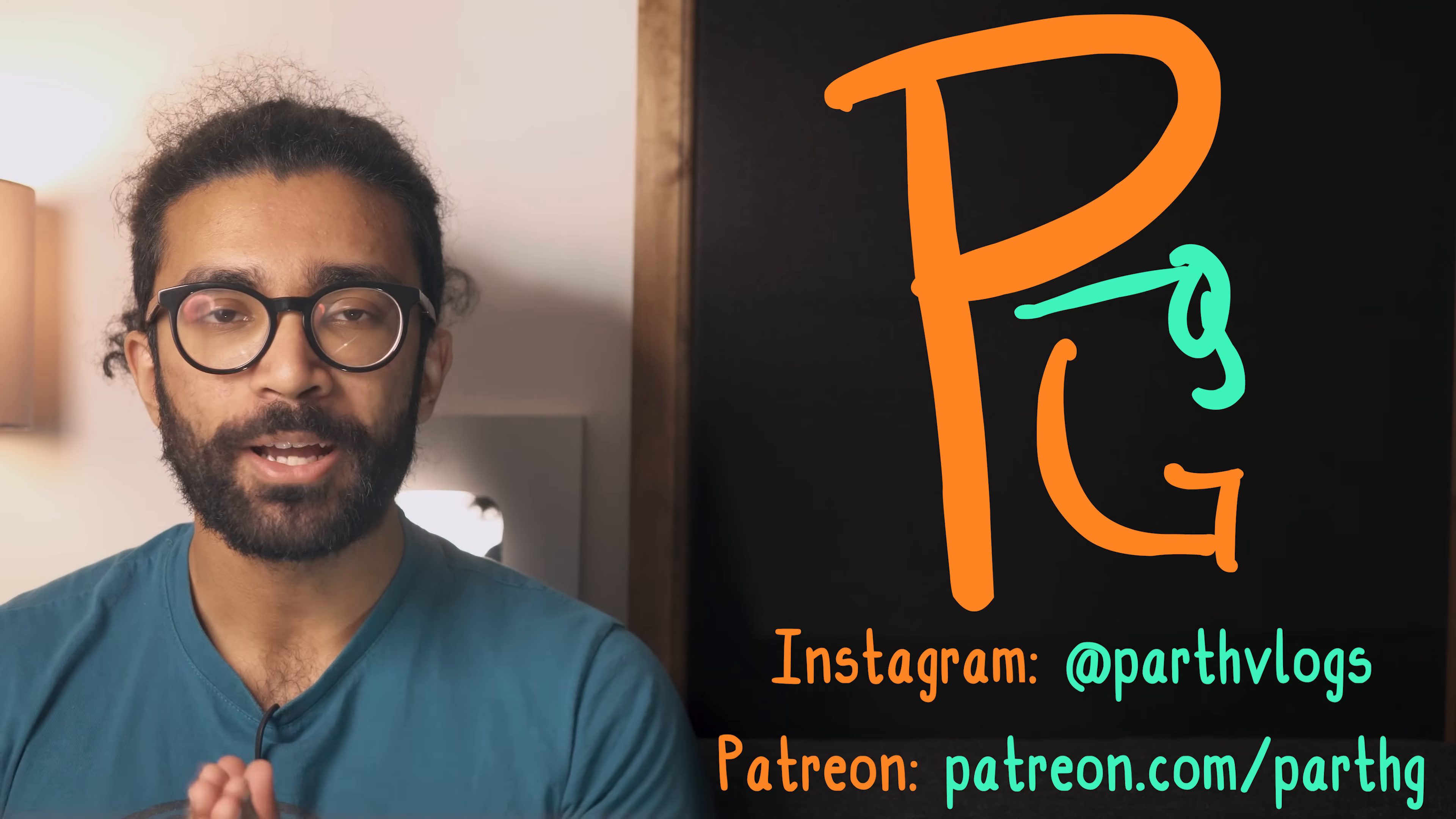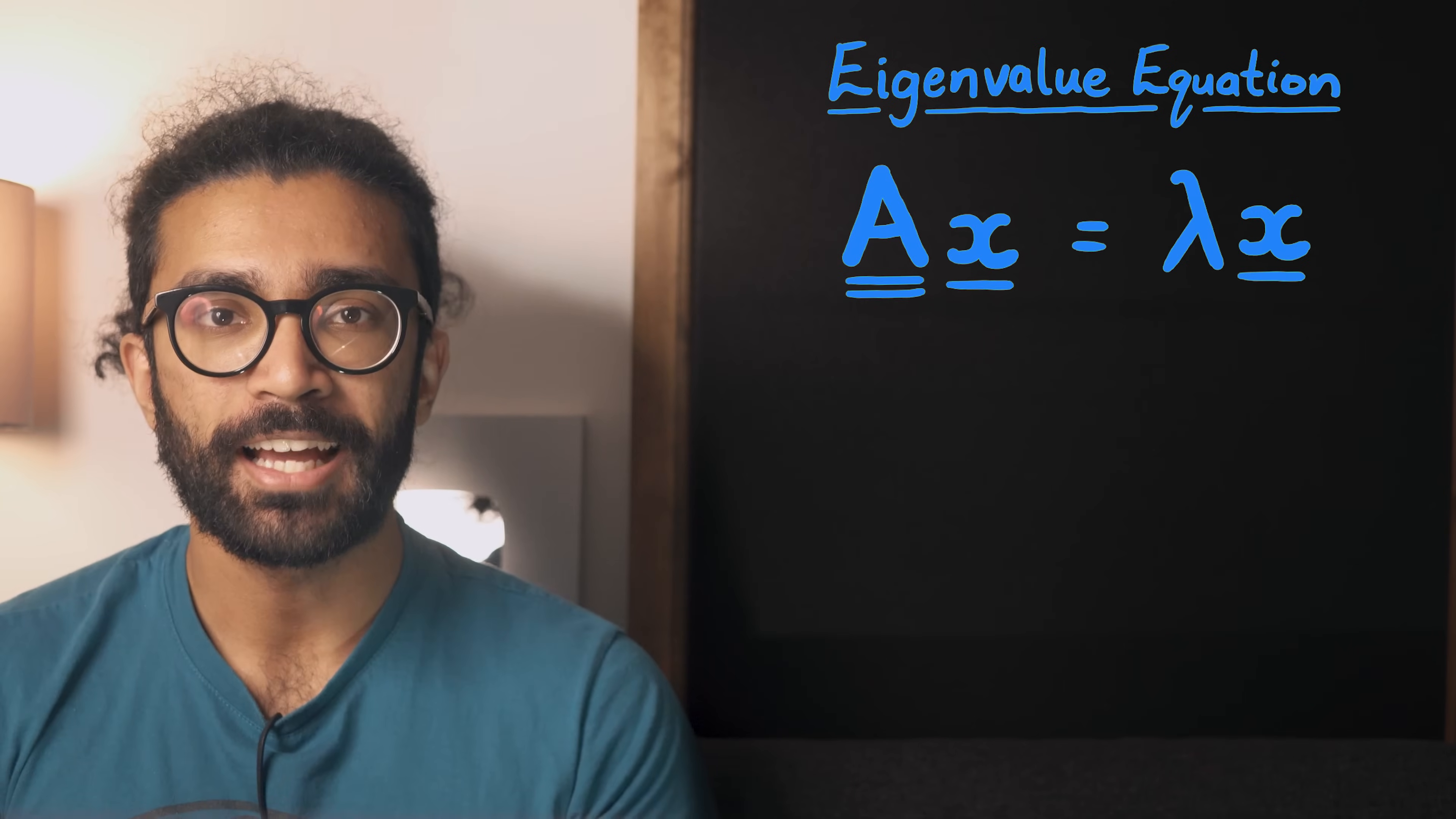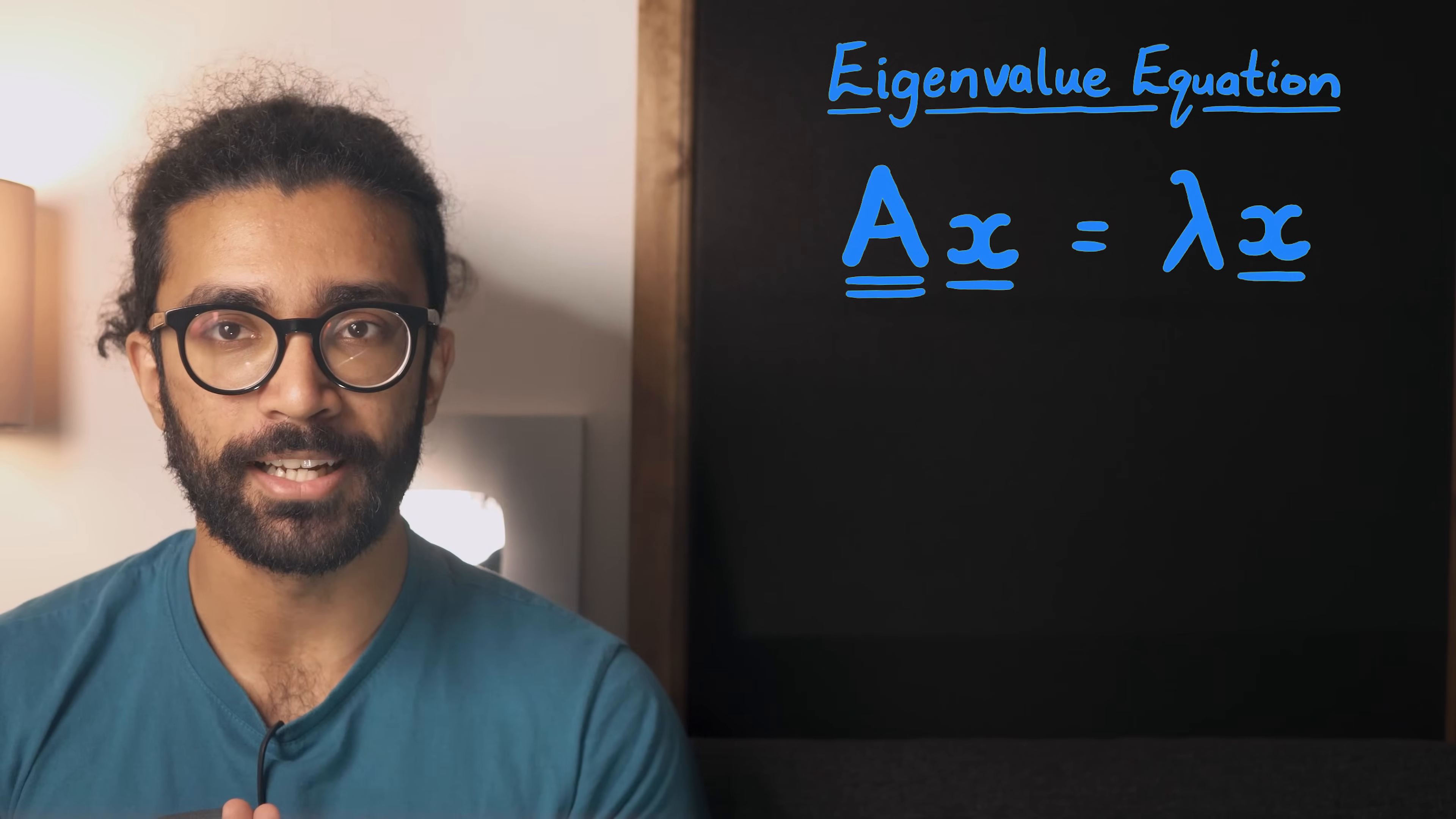Let's get into it. So the equation that we're discussing is known as the eigenvalue equation. A very generic version of it looks like this. In this video, we'll understand what each component means in two different ways. One by considering what this equation means mathematically, and another by considering what it means in the theory of quantum mechanics.